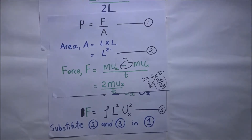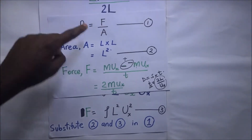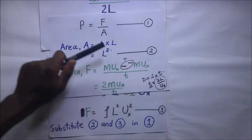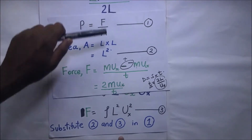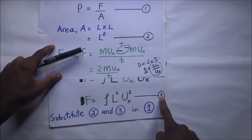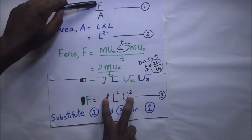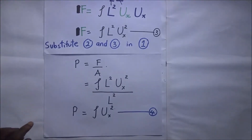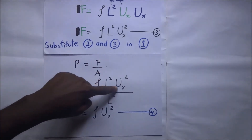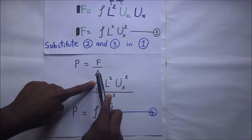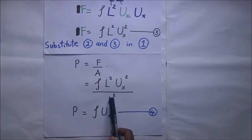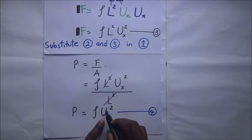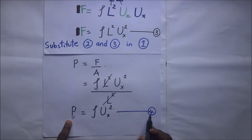Going back to our first equation — pressure equals force over area — we now substitute our expression for force (equation three: ρ·L²·ux²) and our expression for area (equation two: L²). The L² in the numerator cancels with L² in the denominator, leaving us with pressure equals ρ·ux². This is our fourth expression for kinetic pressure.